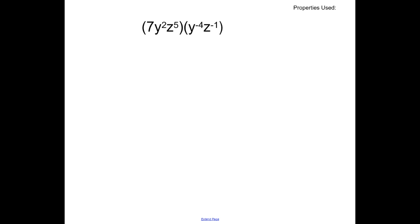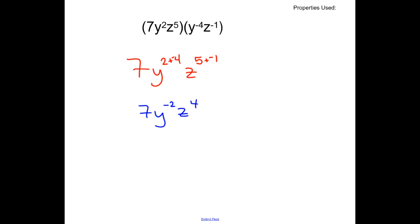Let's try a more difficult one. We'll expand by multiplying piece by piece. The 7 has no other constants, so it stays as 7. Multiply the y terms: y to the 2nd times y to the negative 4th — when multiplying, add exponents — so y to the 2 plus negative 4. Then the z terms: z to the 5th plus negative 1. Adding: we get 7 times y to the negative 2nd times z to the 4th. Since y has a negative exponent, move it to the denominator: the answer is 7z to the 4th over y squared.